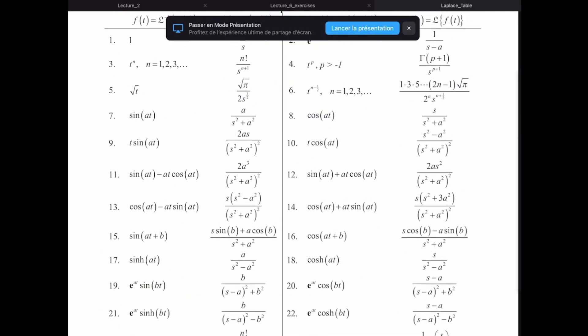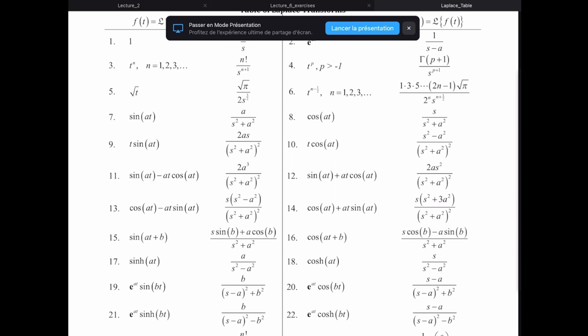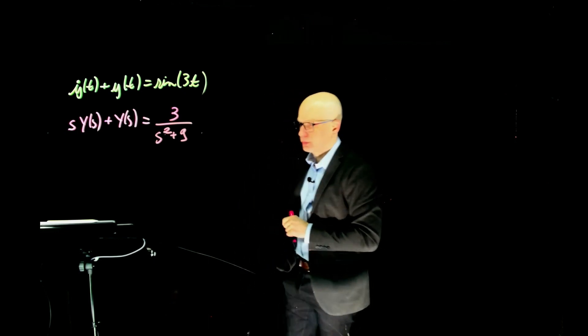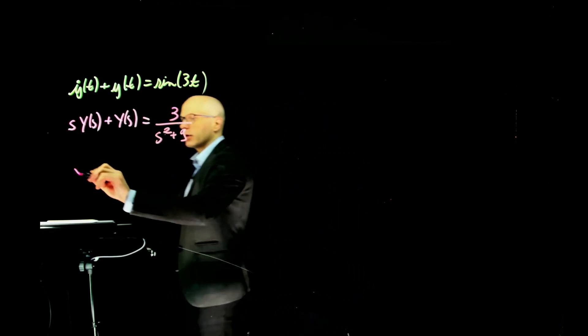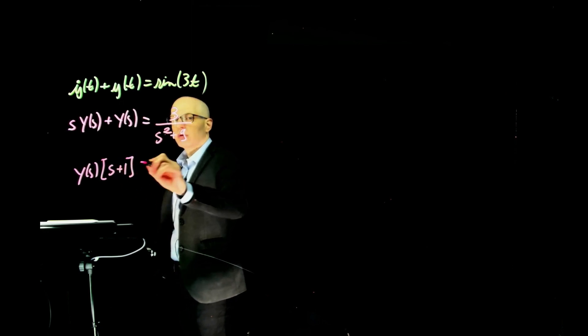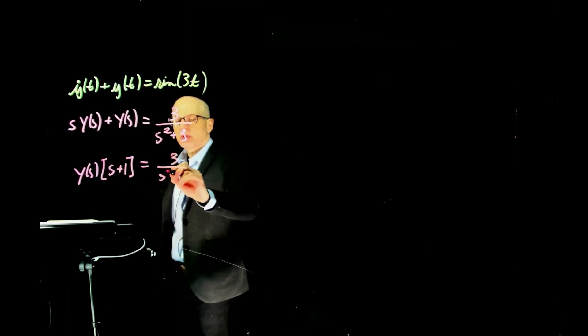The Laplace transform of sine of 3t - that's number 7 in the table - is 3 divided by s² plus 9. We can isolate for Y(s) here: that gives us s plus 1 on the left, and 3 over s² plus 9 on the right.